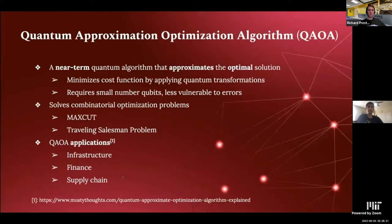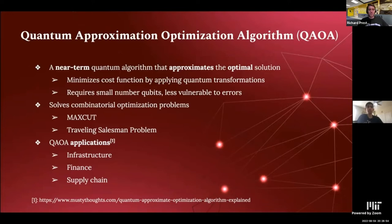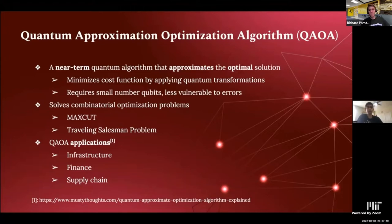QAOA is a near-term quantum algorithm that tries to approximate the optimal solution to some problem. QAOA reaches this solution by trying to reduce a predefined cost function via a series of quantum transformations. This cost function varies based on the problem at hand. Since QAOA is a near-term algorithm, it requires fewer qubits and is less vulnerable to error, making it far more feasible to run on today's quantum computers. QAOA solves the combinatorial optimization problem — problems that try to find the best combination of a series of actions or variable assignments. In this presentation, we'll go through two examples: max cut and the traveling salesman problem. QAOA has many real-world applications including infrastructure such as designing highways with optimal connections, finance including portfolio management, and supply chain solutions.